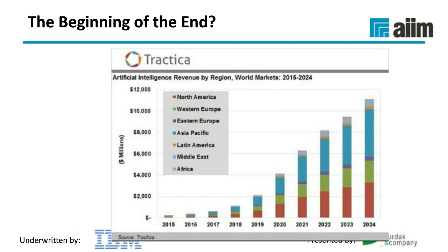What's very interesting is that RPA — this process automation using software robots — is part of a continuum around artificial intelligence. Another topic getting tremendous amounts of hype: as you can see from the slide, the amount of money being invested at the low end in robotics and at the high end in machine learning and artificial intelligence has absolutely exploded over the last four or five years and is expected to grow dramatically in the coming decade. As all these new technologies go through a certain hype cycle, you can expect to hear even more talk about robotics and artificial intelligence, but we're also seeing significant progress being made.